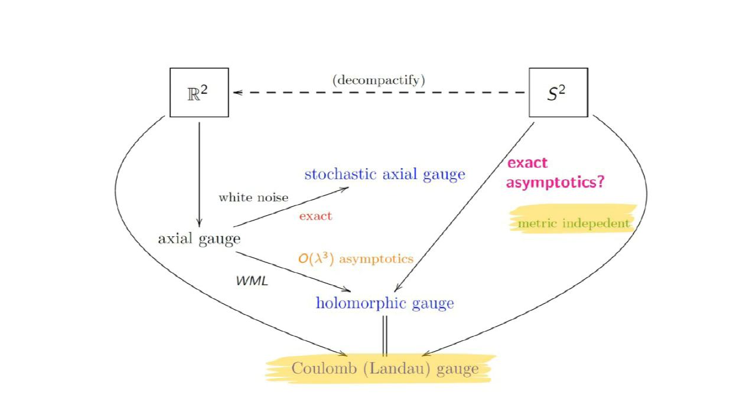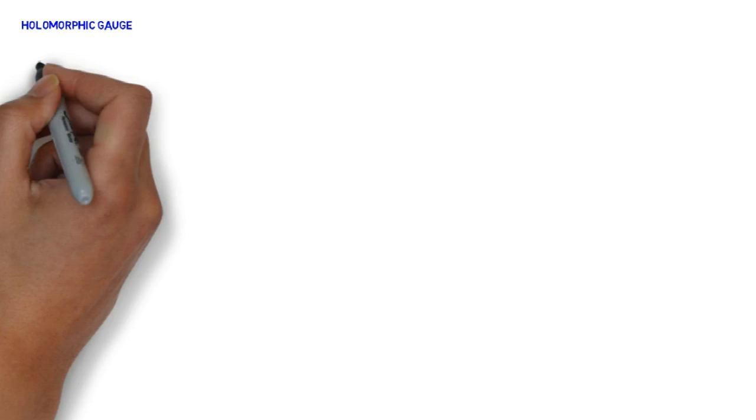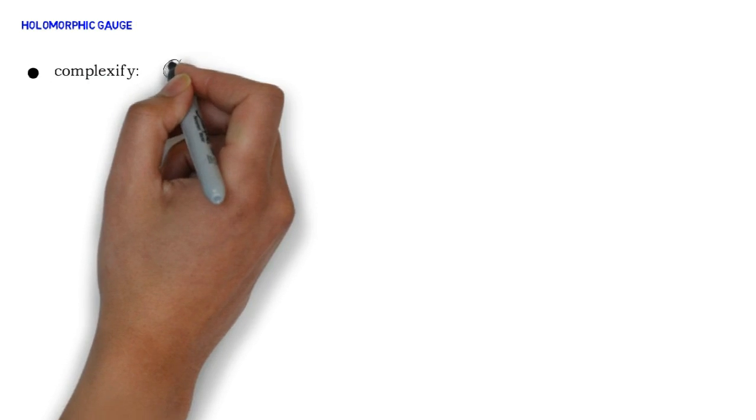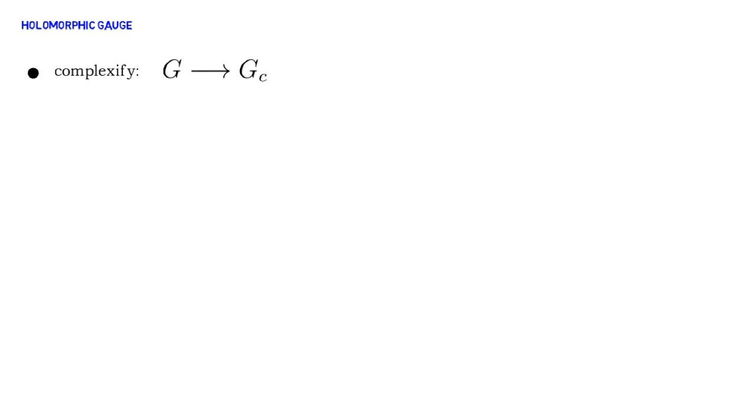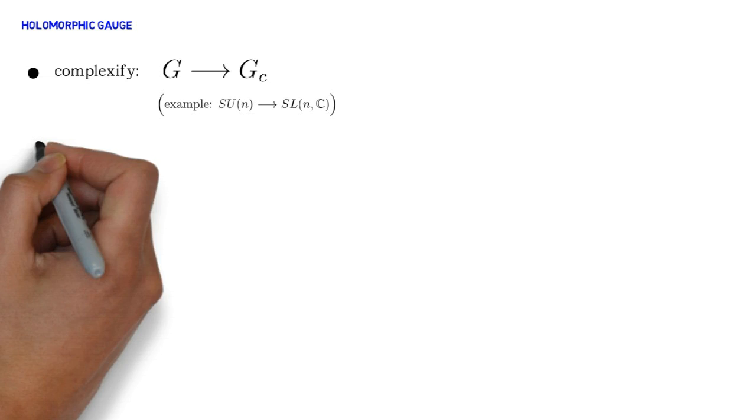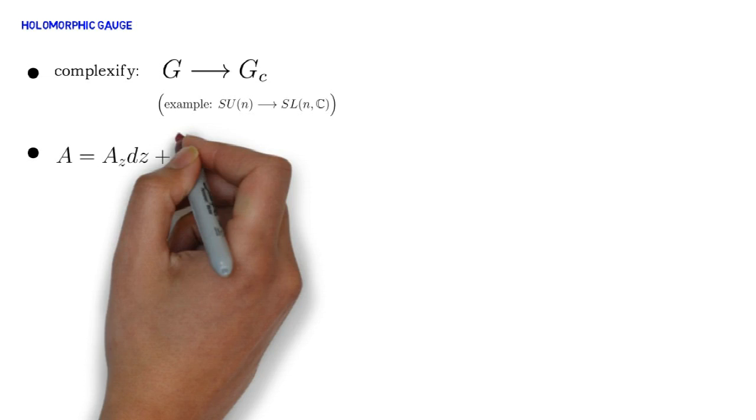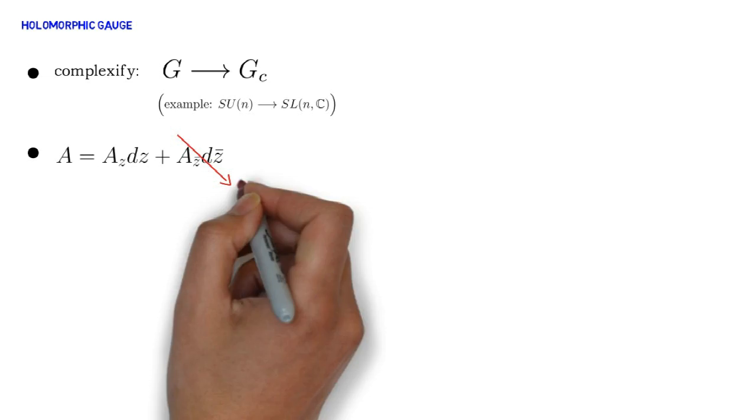The next gauge I consider is holomorphic gauge. Here, the space of gauge fields is complexified, in other words, our gauge group G is replaced by its complexification Gc. Our complexified gauge field now has dz and dz̄ components, and holomorphic gauge sets the dz̄ component equal to zero.